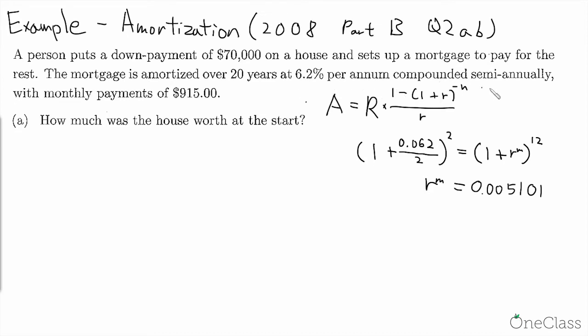How much was the house worth at the start? So here's the tricky part and like what I've always been saying, interest rates conversion is always integrated everywhere, so make sure you know how to do it. Here our interest rate is given semi-annually but our payment period is monthly. So what we will have to do is match the semi-annual into monthly. Here we have (1 + 0.062/2)^2 equals (1 + R)^12, and this is the monthly effective rate. And we have found that to be 0.005101.